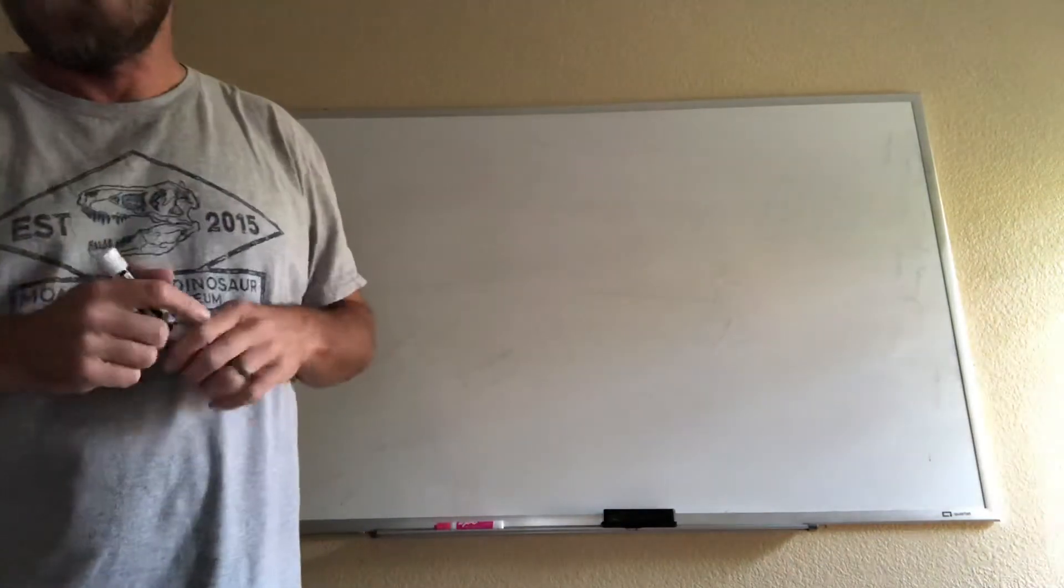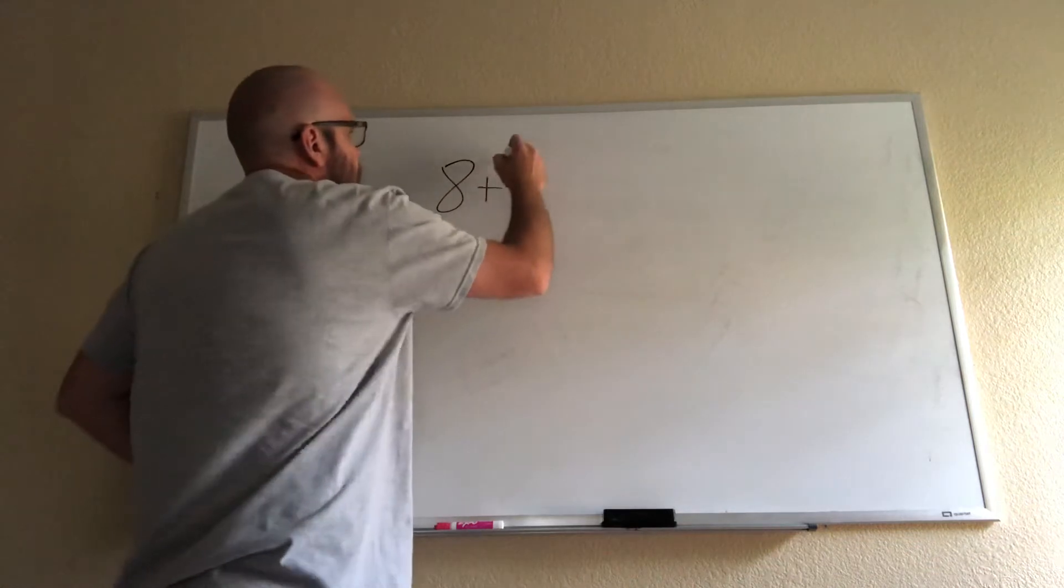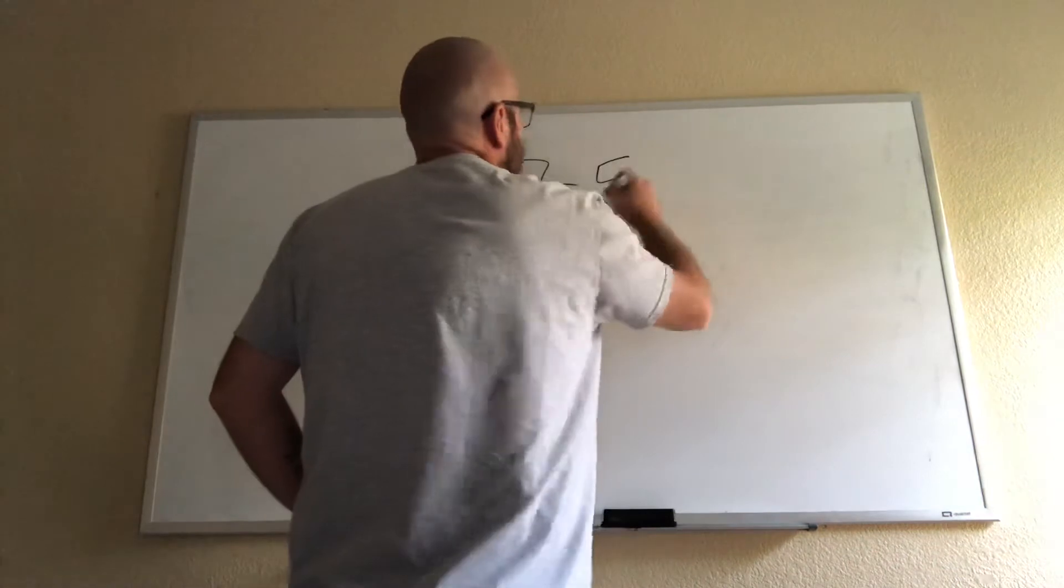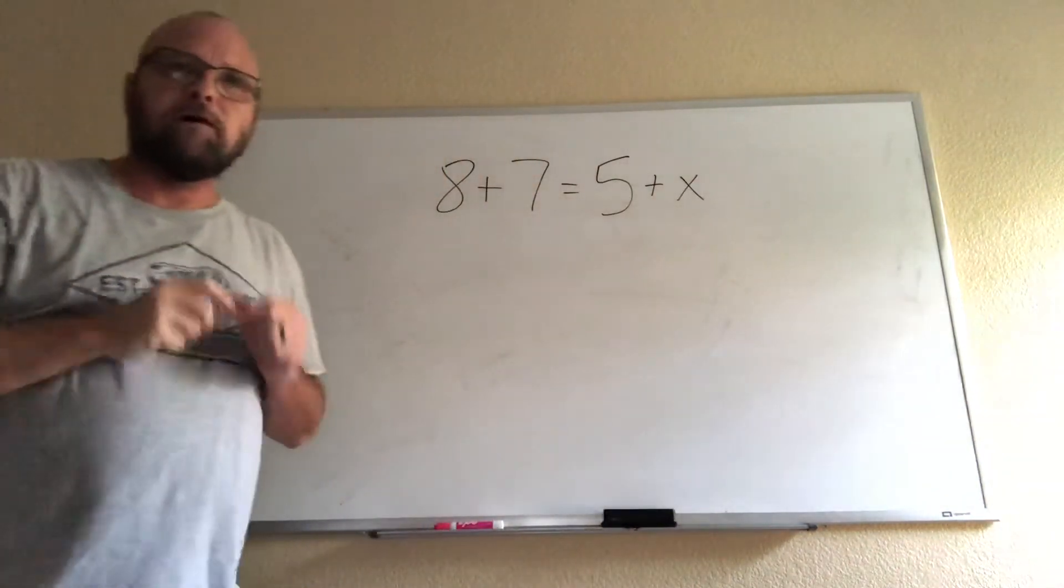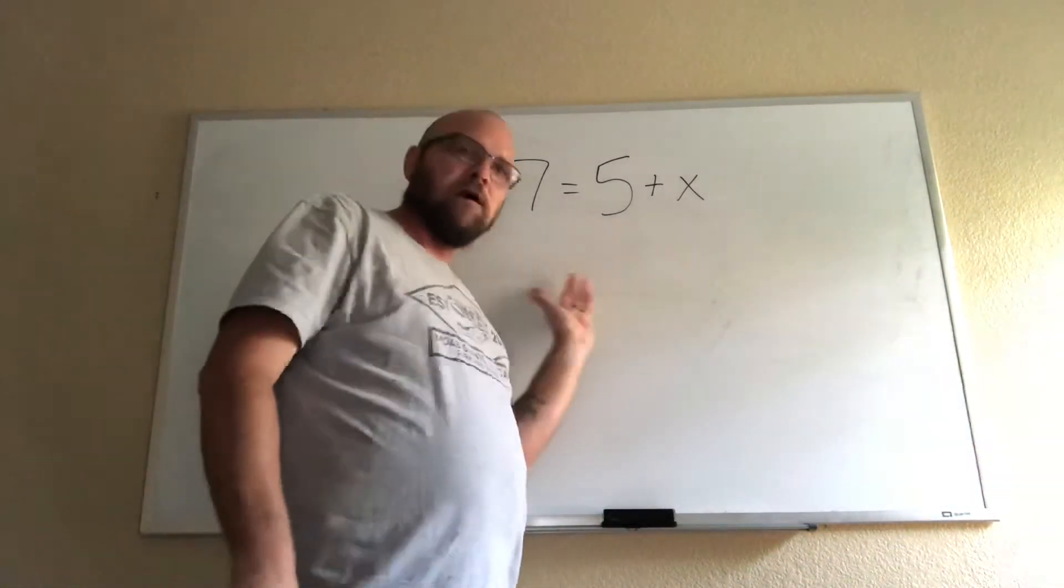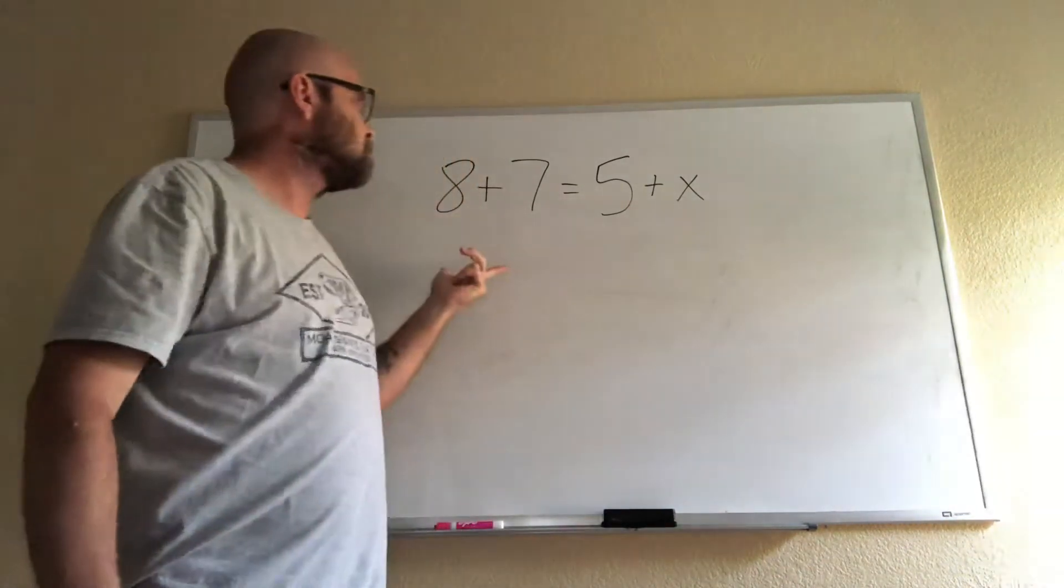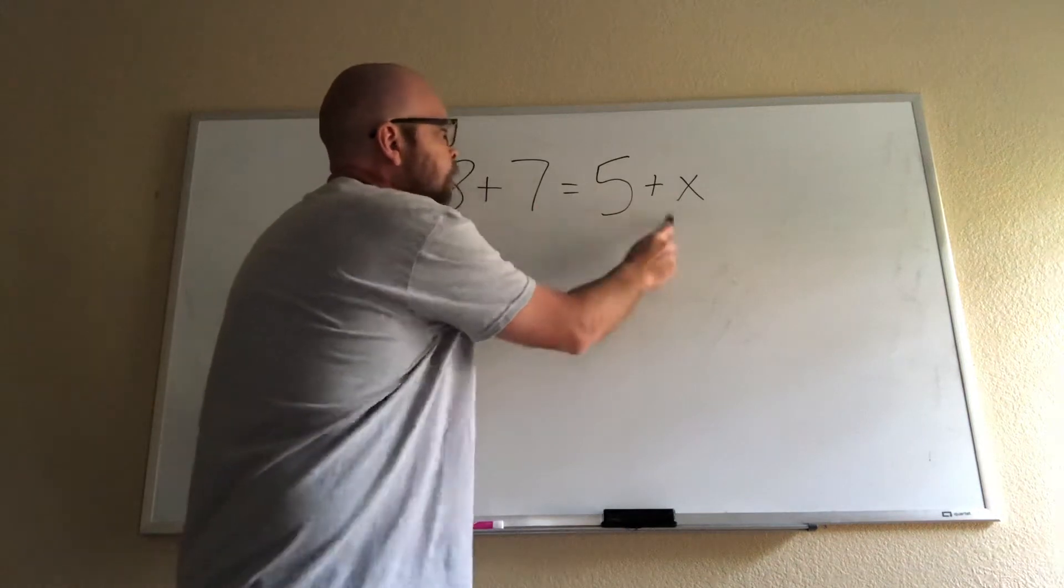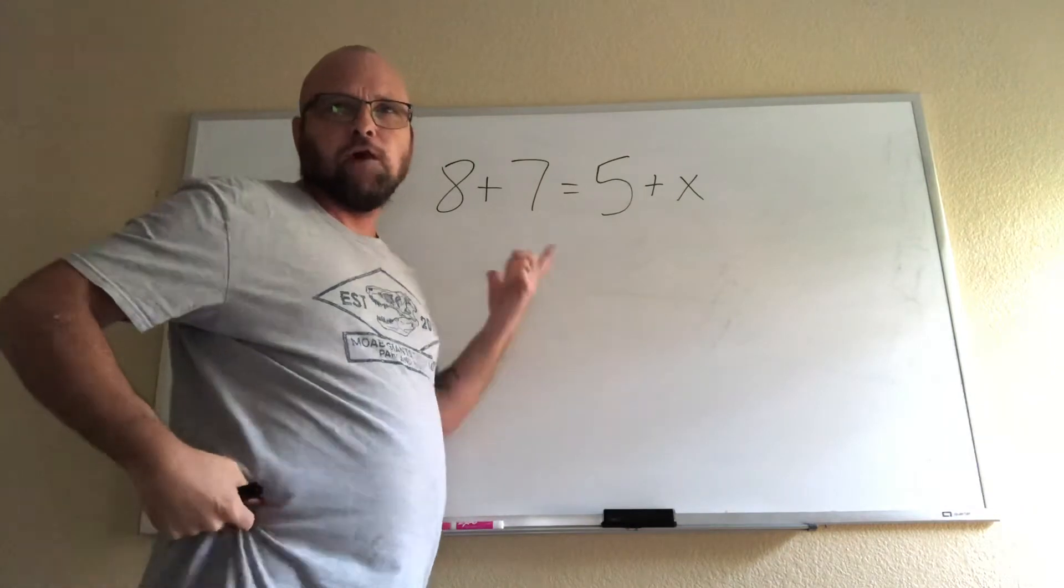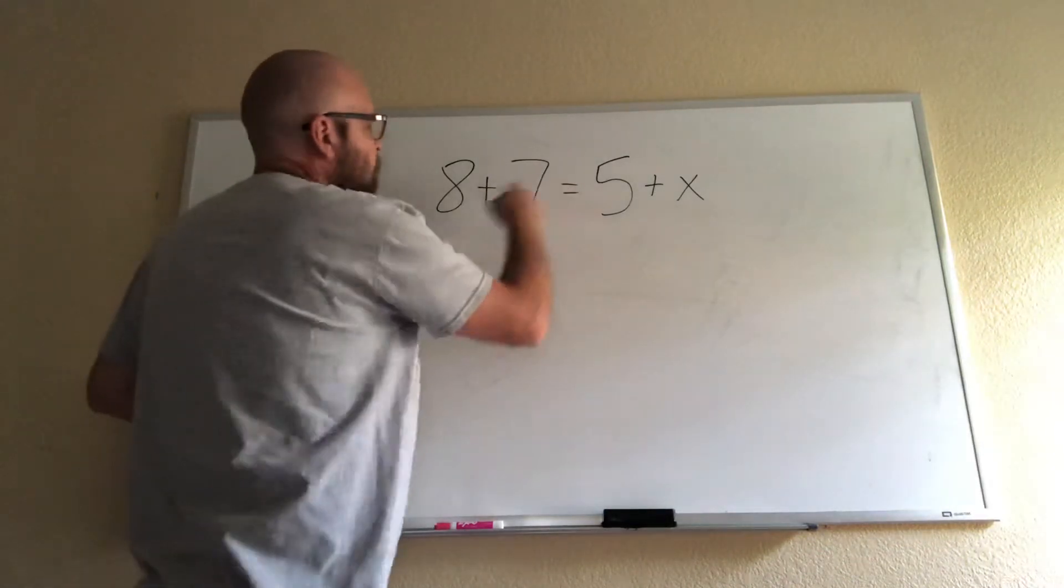The first equation that is on there is 8 + 7 = 5 + X. This is found above the picture of the pan balance and the directions say solve for X. X equals... Well, if we look at the equation it's very very simple. The equal sign means both sides of this equation have to have the same value when you solve it. They both have to be the same. So for example, this side of the equal sign, 8 + 7 is 15.